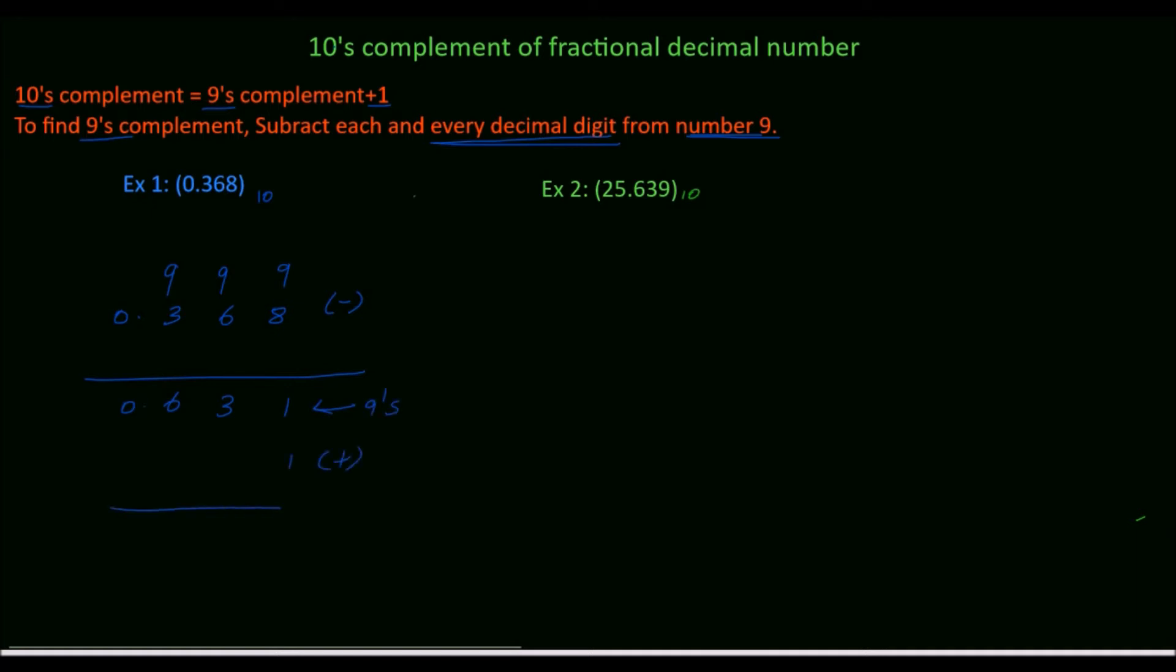So add 1 with the rightmost digit. 1 plus 1, 2, 3, 6, point. 0.632 base 10 is the 10's complement of example 1.